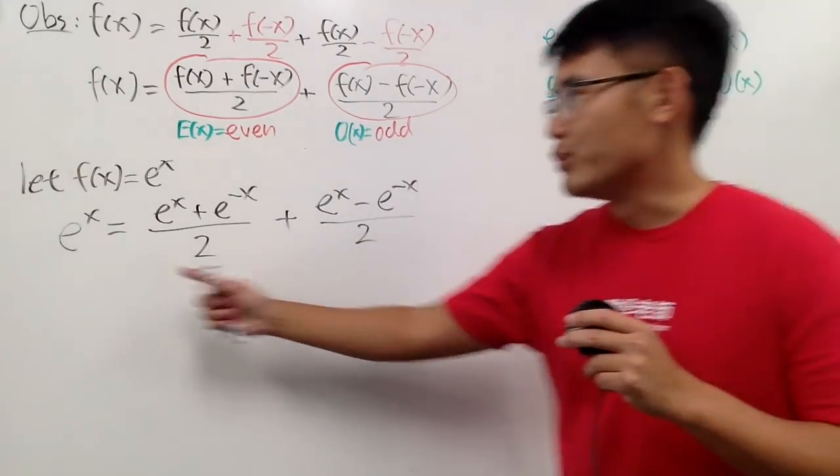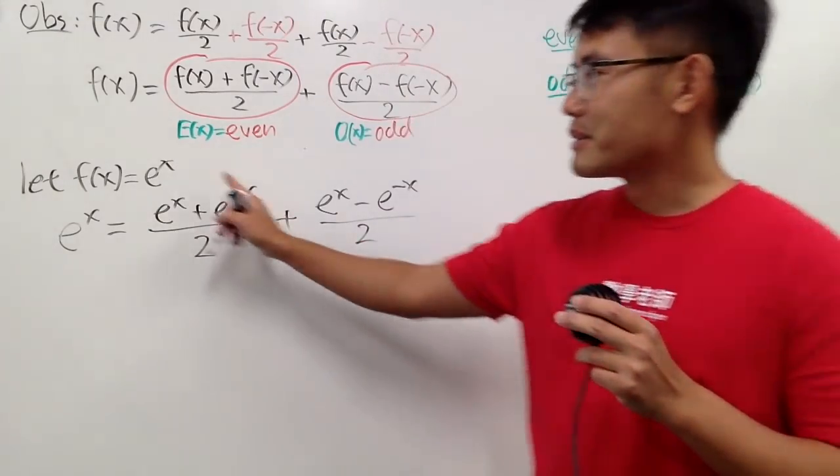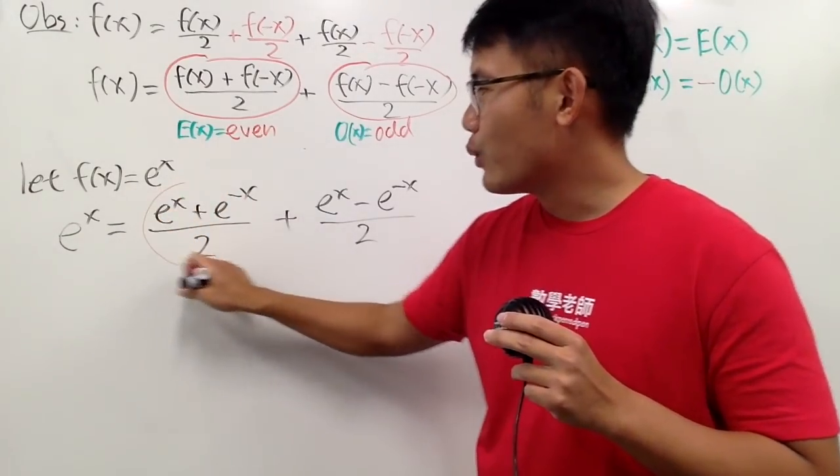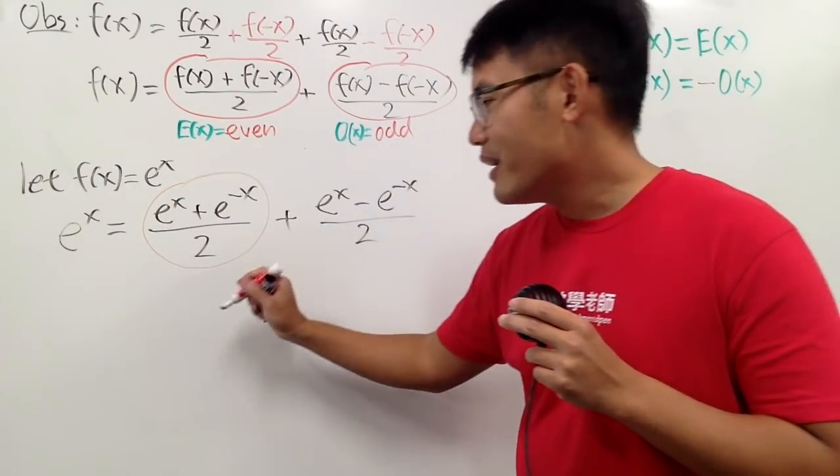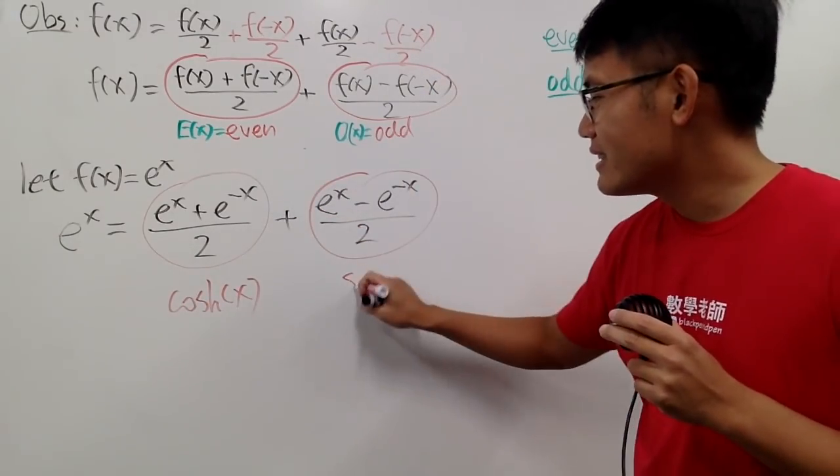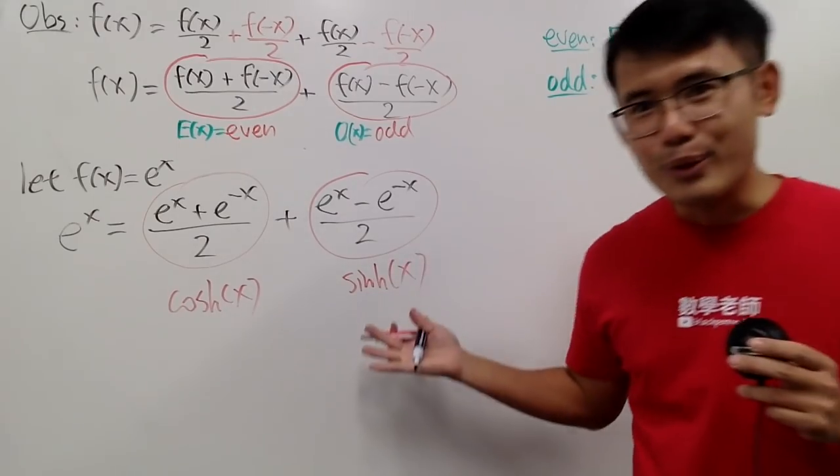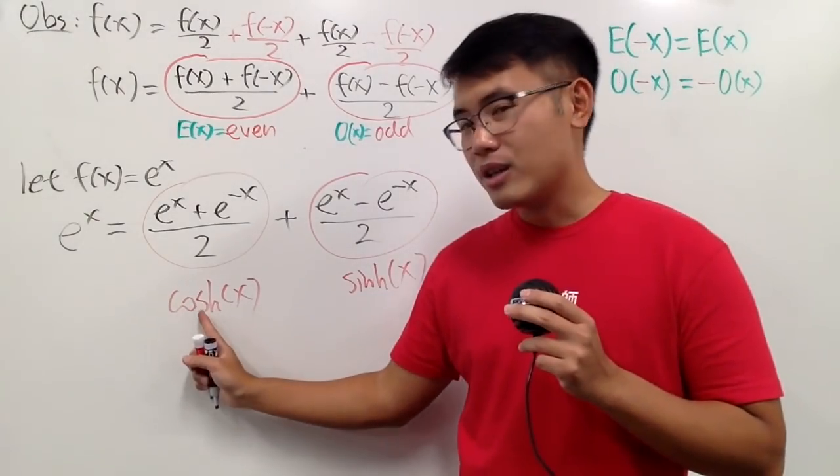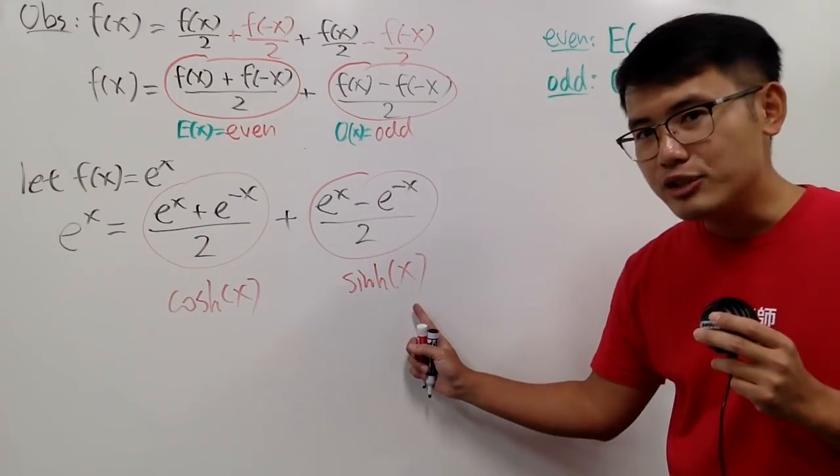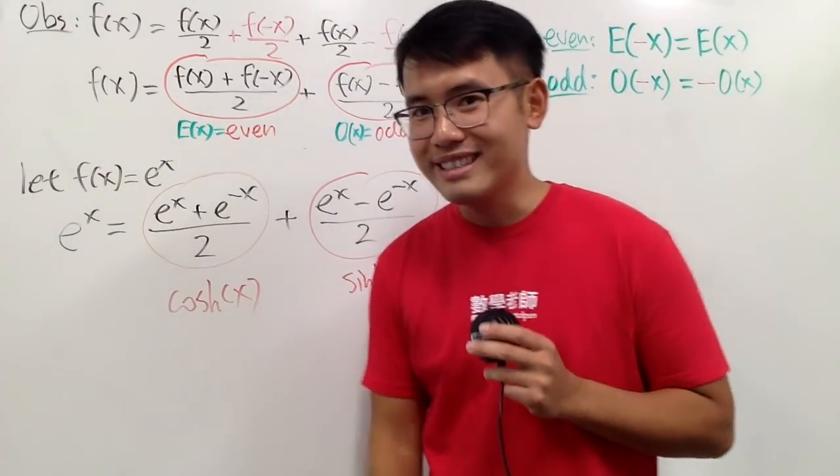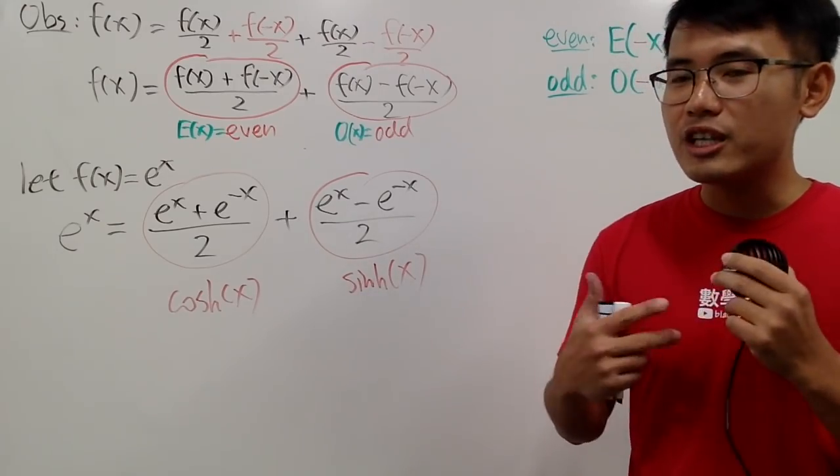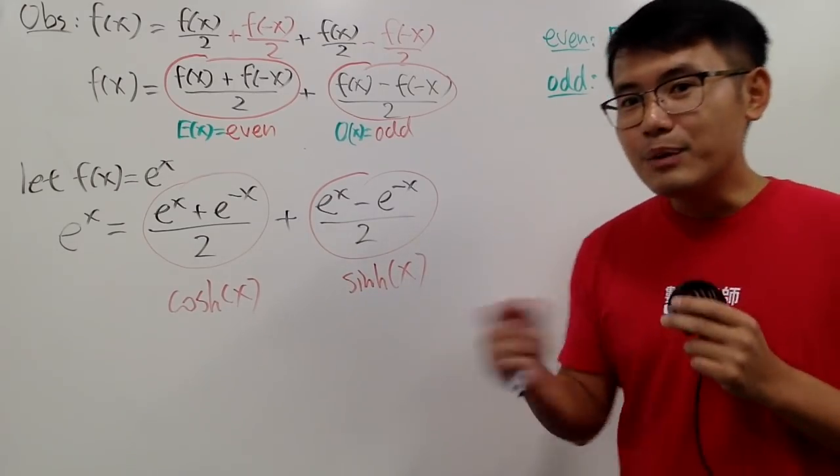And of course, if you work this out, you will get e to the x back. This is the even part. This is the odd part. But do we recognize what this is? This right here is the cosh function. And this is the sinh function. So cool, isn't it? In other words, cosh x is just the even part of e to the x. And sinh x is just the odd part of e to the x. And of course, there are lots more things that can be said about cosh and sinh. If you want to see more, be sure to check out my other videos for it as well. Anyway, at the moment, that's it.